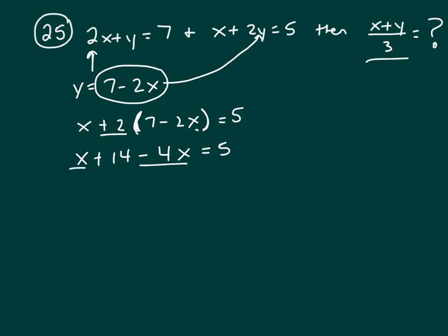x minus 4x is negative 3x. Now let's subtract 14 from both sides, and that will give me negative 9. Now divide both sides by negative 3. You get x equals 3.